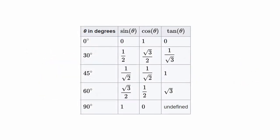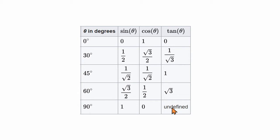Then we will use the table to solve the problem. The table covers 0 to 90 degrees. The key angle values are there — sine value, cosine value, and tan value. If you need cotangent, cosecant, or secant, use sin, cos, and tan to solve the problem.